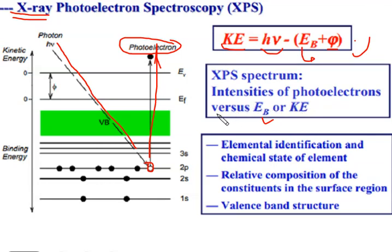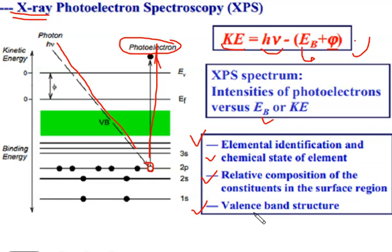XPS is used for the identification of elements and the identification of the chemical state of the element. It is also used for the identification of relative composition of the constituents on the surface of a material, as well as the study of valence band structures. These are some of the important applications of XPS, enabling us to know detailed information about the material, specifically surface information.